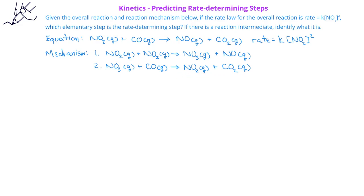Based on what we've been given so far, which elementary step is the rate determining step? Also, is there a reaction intermediate in this mechanism, and if so, what is it?